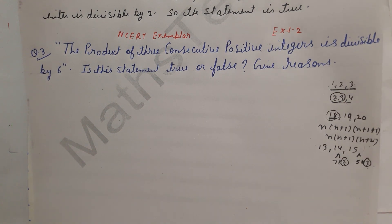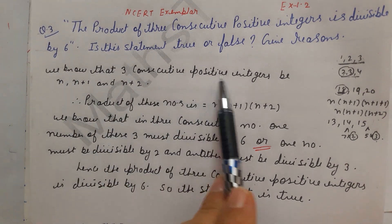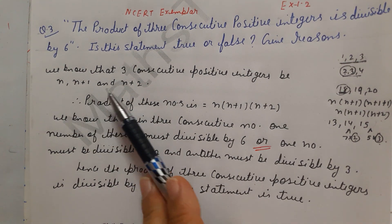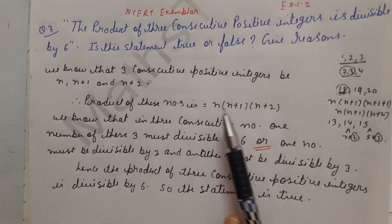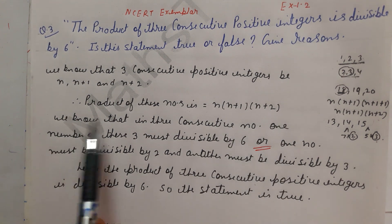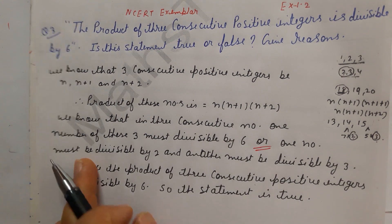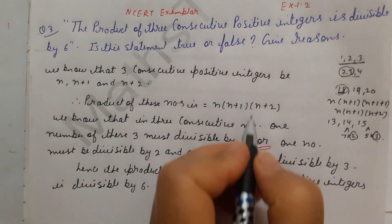Now let's see how to write the answer. We know that 3 consecutive positive integers are n, n+1, and n+2, and their product will be n × (n+1) × (n+2). We know that in 3 consecutive numbers, one number must be divisible by 3. Let me write an example.